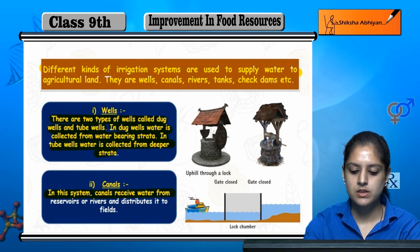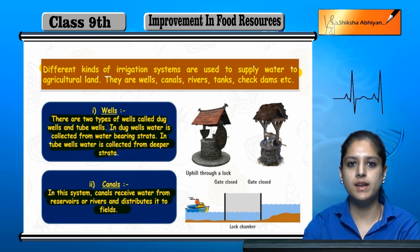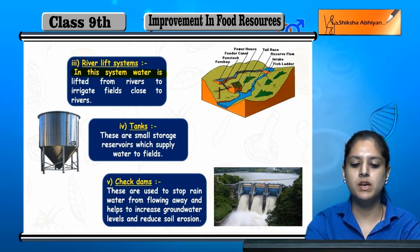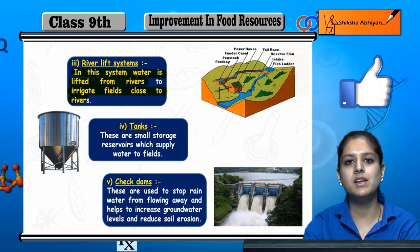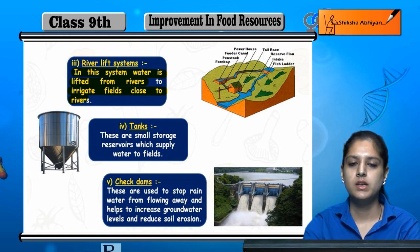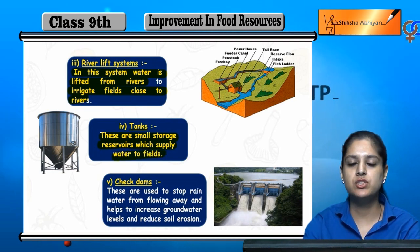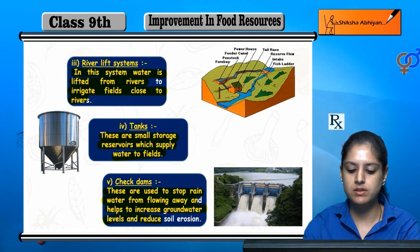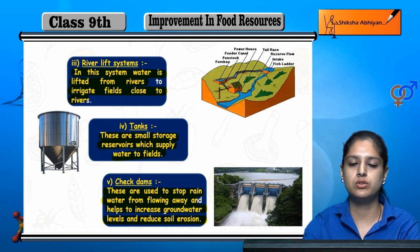Next is canals. In the canal system, canals receive water from reservoirs or rivers and distribute it to the fields. Next is the river lift system, where water is lifted from the river and distributed. Next is tanks, which are storage reservoirs that store water and supply it to fields. Next is check dams, which stop rainwater from flowing away, help increase groundwater levels, and reduce soil erosion.